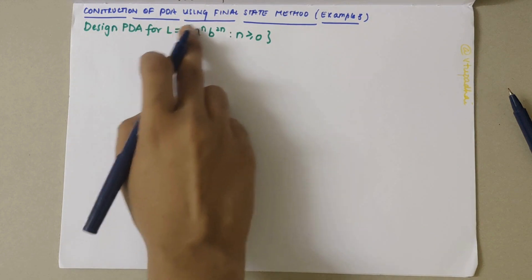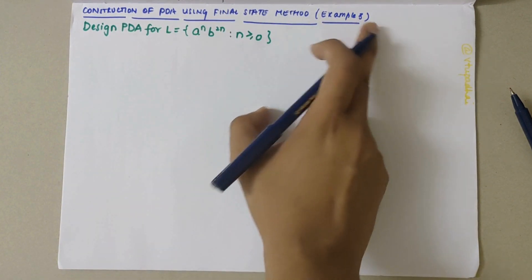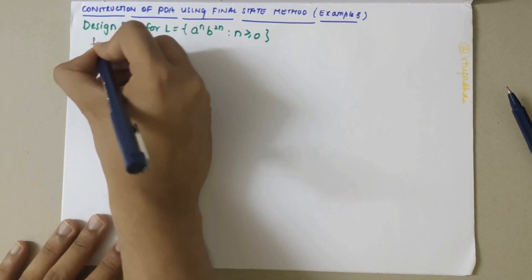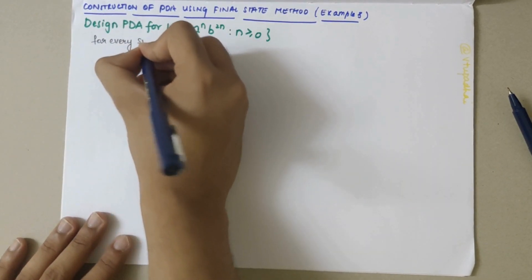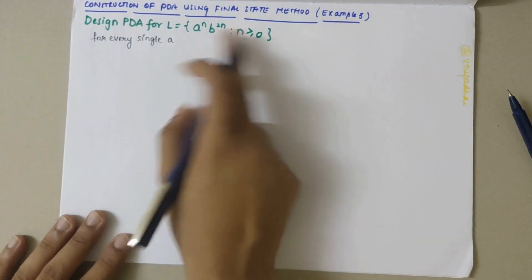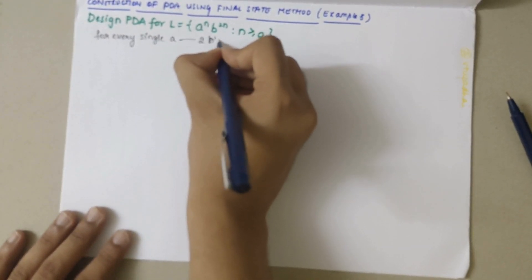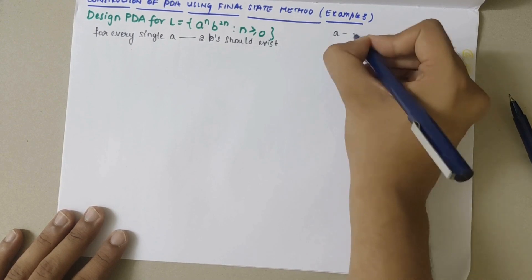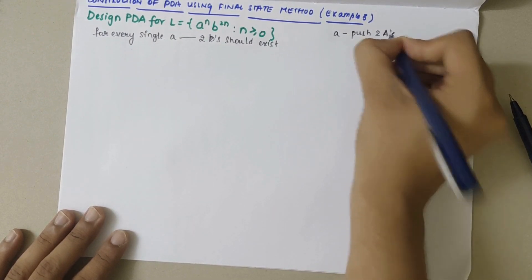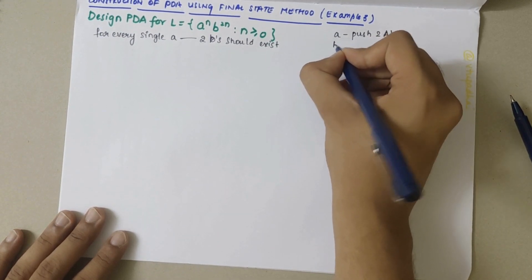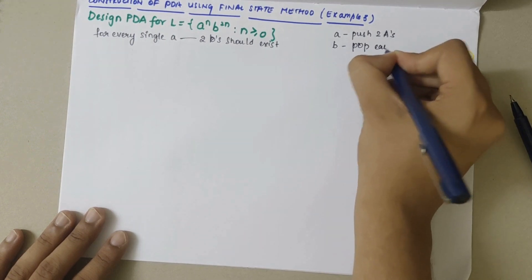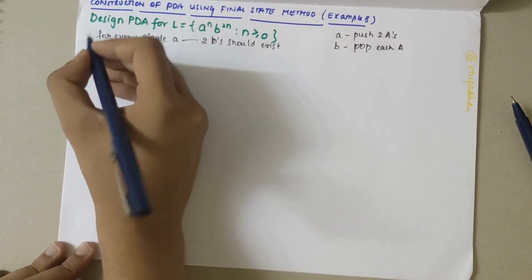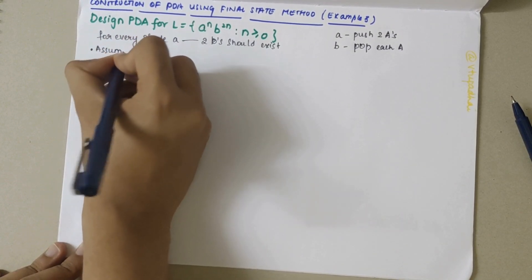In this video we'll be looking into construction of a PDA using the final stack/final state method. This is the third example. We need to design a PDA for the given language, which says that for every single 'a', two B's should exist. Whenever we encounter 'a' we should push two capital A's, and whenever we encounter 'b' we should pop each A.